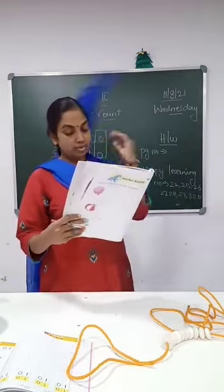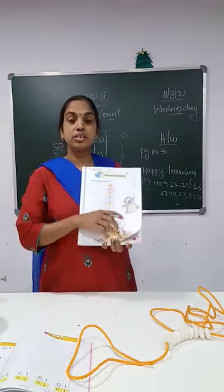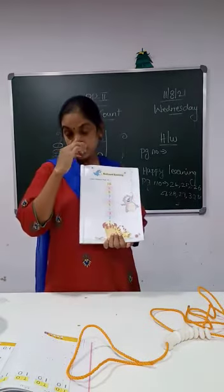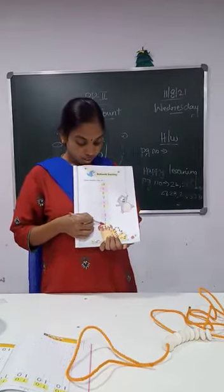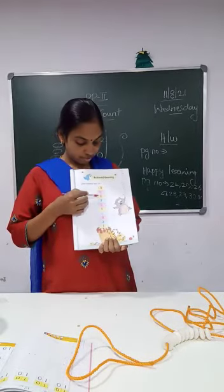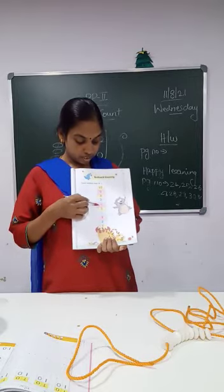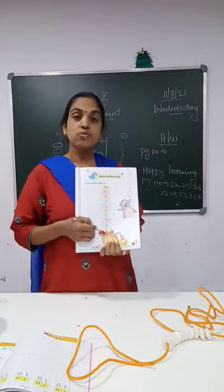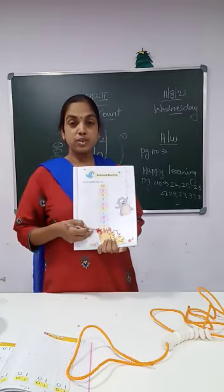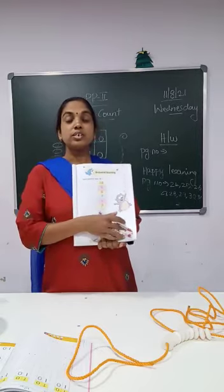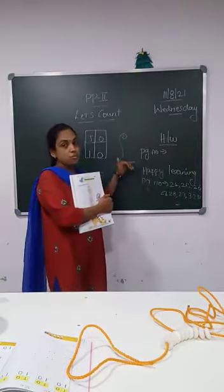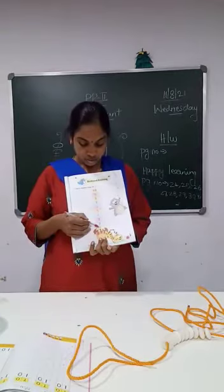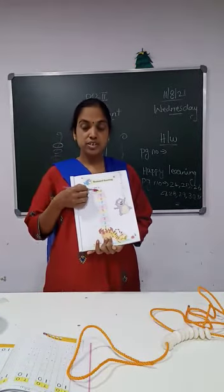And then you have backward counting. We have learned backward counting in the previous class. Now see: 10, 9, 8, 7, 6, 5, 4, 3, 2, 1. This is backward. I told you — the number which comes upward. Now from here: 10, after 10 — 9.